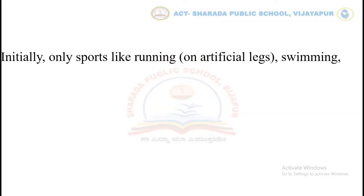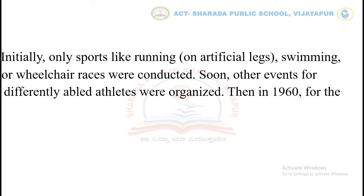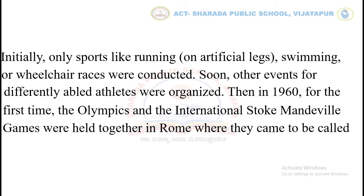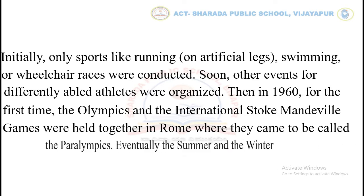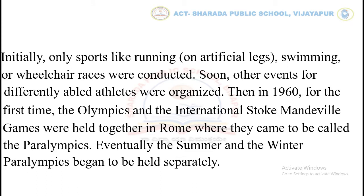Initially, only sports like running on artificial legs, swimming, or wheelchair races were conducted. Soon, other events for differently abled athletes were organized. Then, in 1960, for the first time, the Olympics and the International Stoke Mandeville Games were held together in Rome, where they came to be called the Paralympics. Eventually, the Summer and the Winter Paralympics began to be held separately.